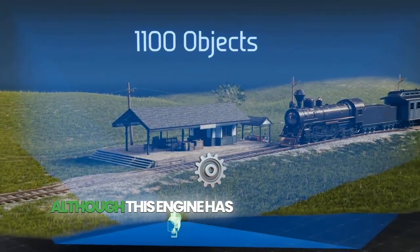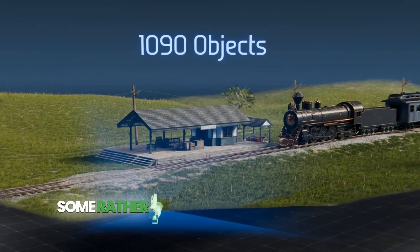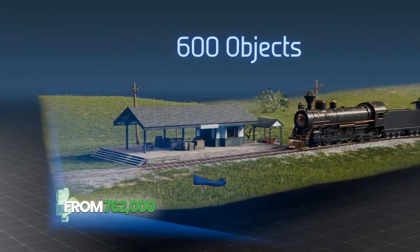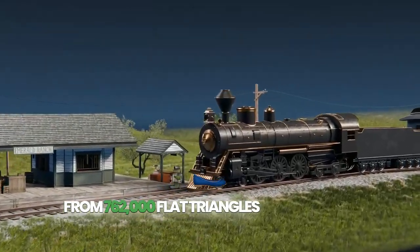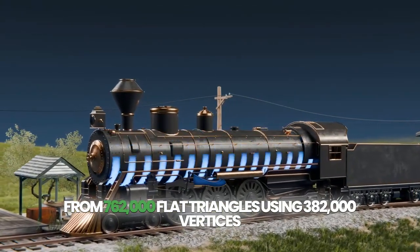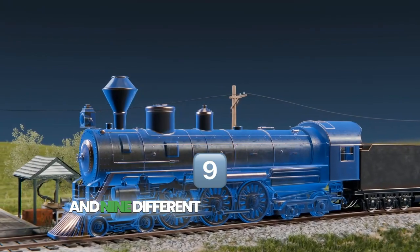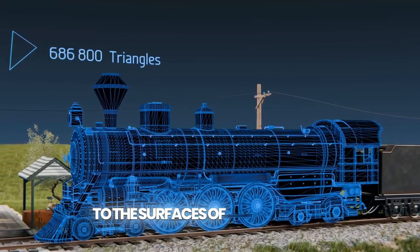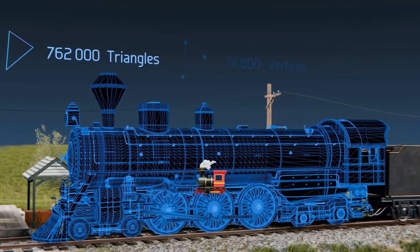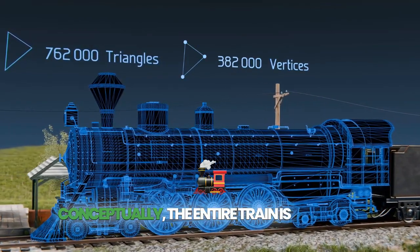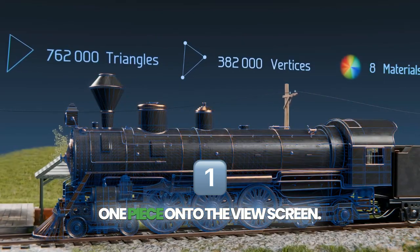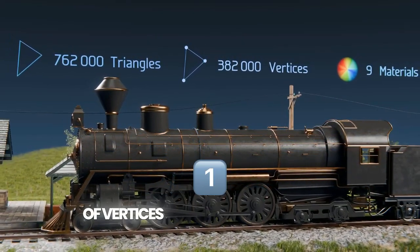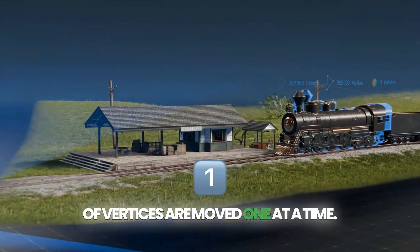Let's focus on the locomotive as an example. Although this engine has rounded surfaces and some rather complex shapes, it's actually assembled from 762,000 flat triangles using 382,000 vertices and 9 different materials or colors applied to the surfaces of the triangles. Conceptually, the entire train is moved as one piece onto the view screen, but actually each of the train's hundreds of thousands of vertices are moved one at a time.